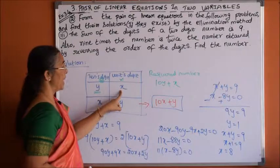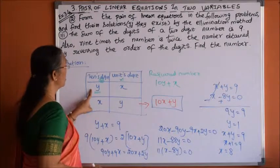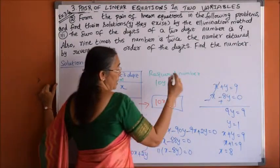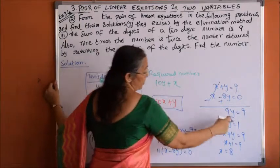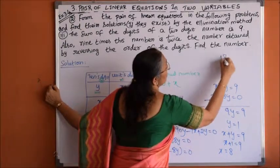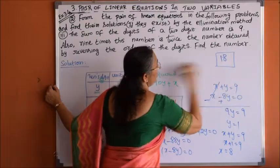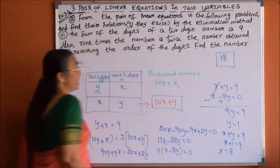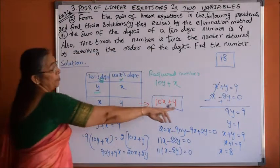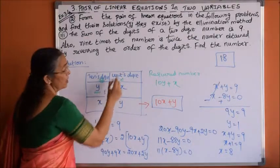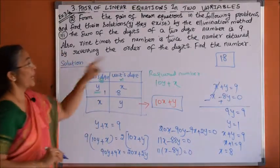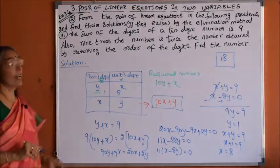The units digit is x and the tens digit is y. So the required number is: tens digit is 1 (y) and units digit is 8 (x), giving 18 as the required number.